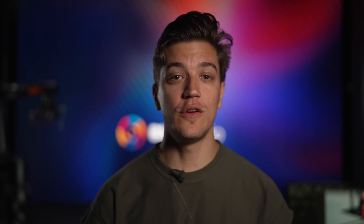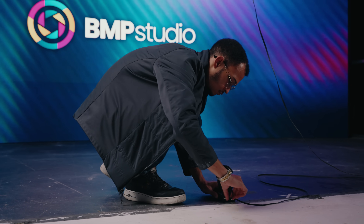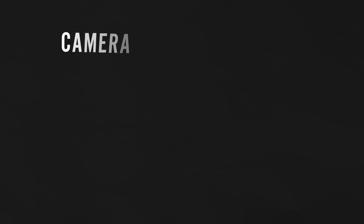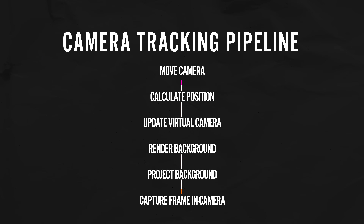ICVFX studios use tracking systems to pinpoint the real camera's location and orientation. It sends that data to the virtual world so that the background can be rendered and projected from the correct perspective. The only problem is that there will always be inherent latency, as the tracking system can't predict the future — it doesn't know where you're planning to move the camera, it can only tell the computer where the camera is after it locates it.